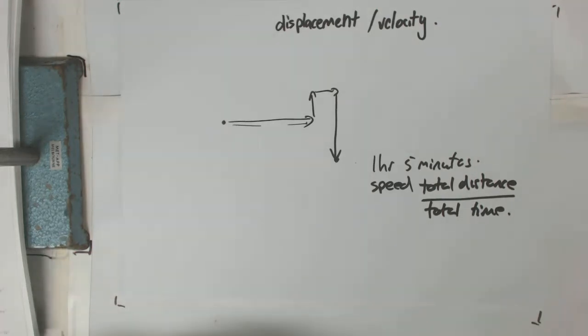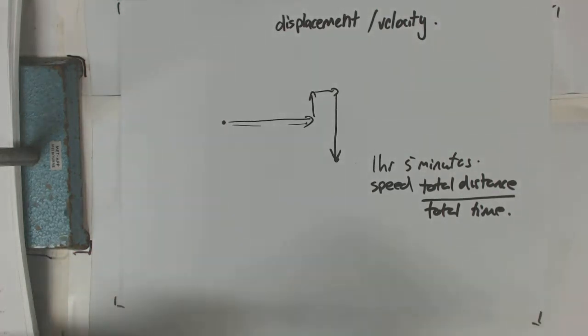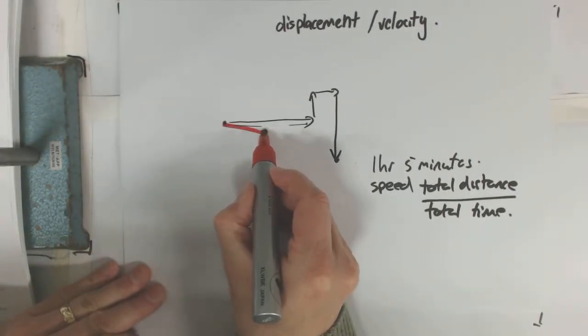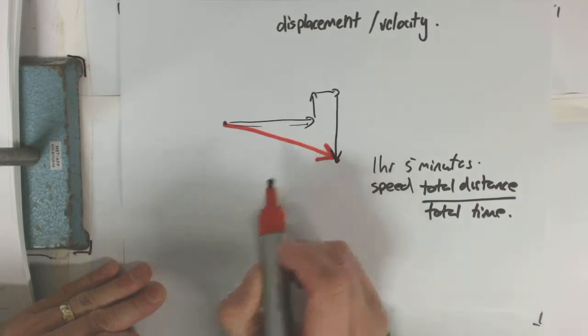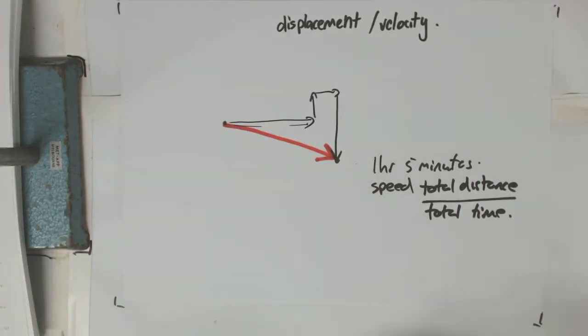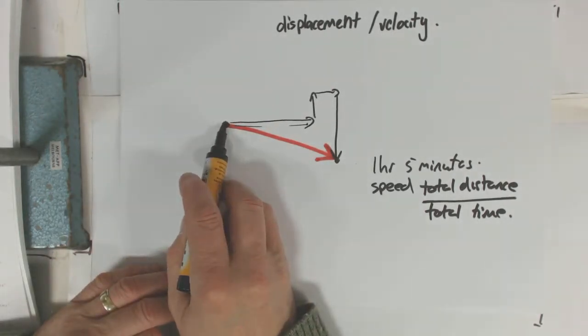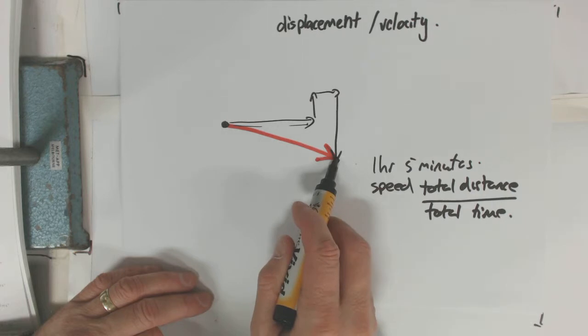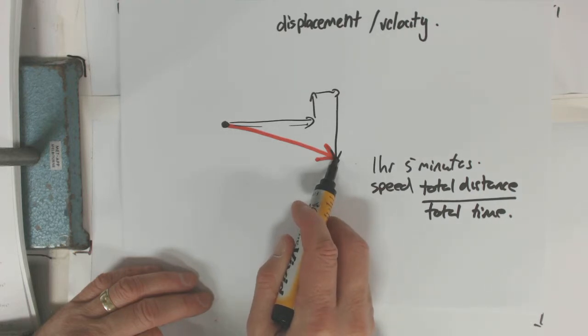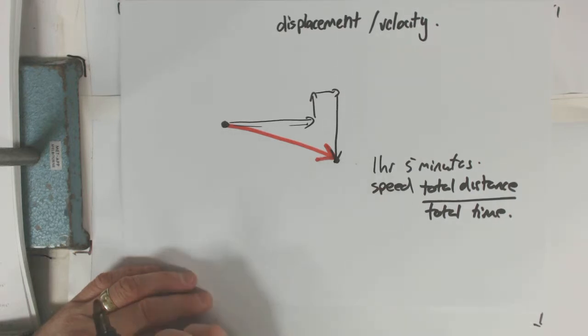But your velocity is your displacement divided by the time. Now your displacement is your distance and direction from where you started to where you finished. So this red vector is your displacement.